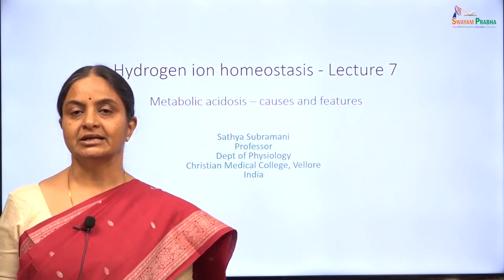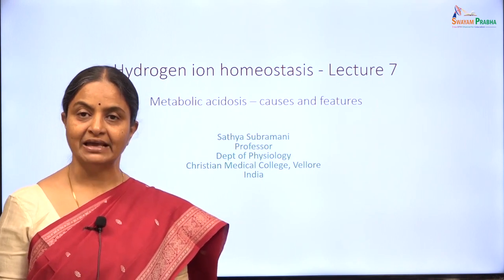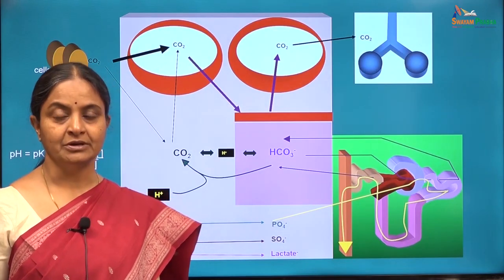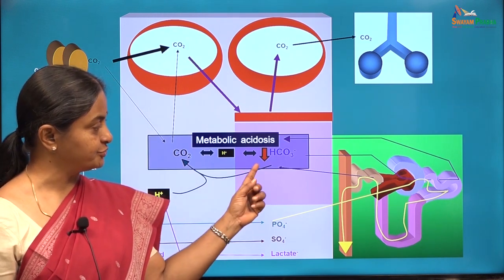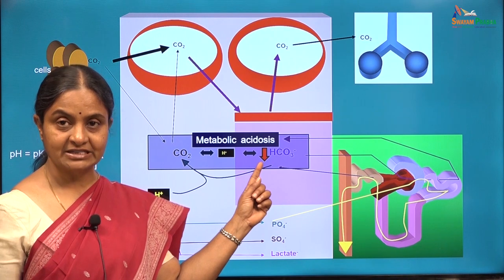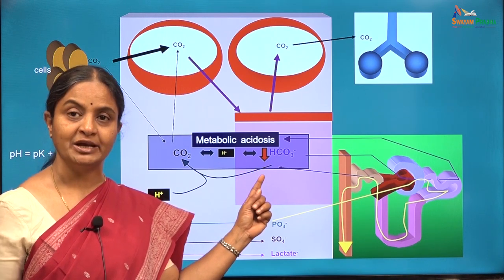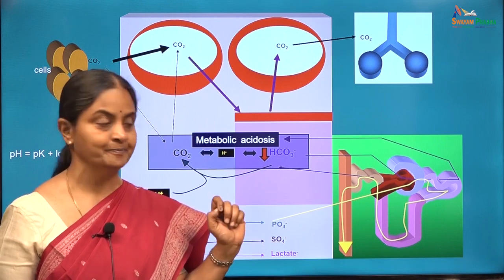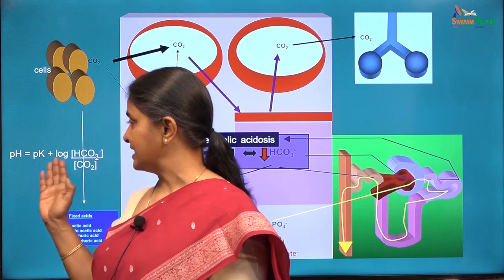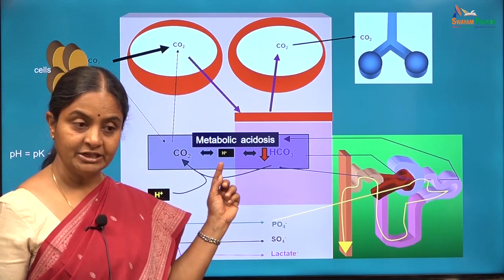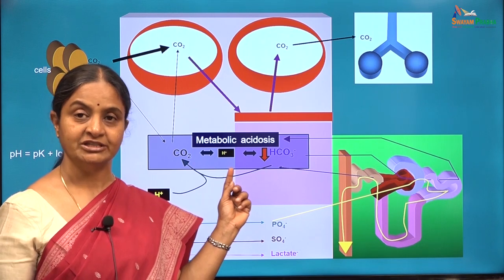In this session, we will consider causes and features of metabolic acidosis, and the broad mechanisms leading to the condition called metabolic acidosis. This term refers to a reduction in plasma bicarbonate concentration from its normal value of 22 to 25 milliequivalents per litre. Any reduction in plasma bicarbonate, as per the Henderson-Hasselbalch equation, will lead to an increase in hydrogen ion concentration in plasma and therefore acidosis.